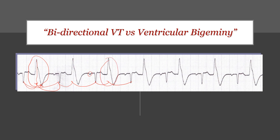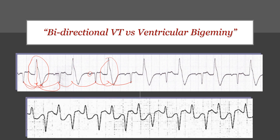That is the ventricular bigeminy, while in bidirectional VT the complexes will be very regular — so it will look like this. That is the difference between bidirectional VT versus ventricular bigeminy.